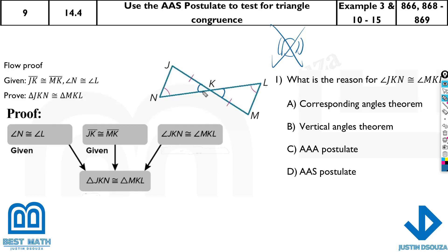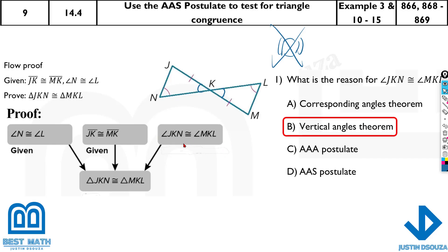So we can easily say angle JKN must be congruent to angle LKM. Why? Because they're vertically opposite angles — vertical angle theorem. So what is the reason here? Option B is the reason — that is the reason for the third step, because this is what's missing. The reason for JKN being congruent to MKL is vertical angle theorem.